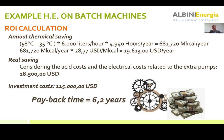This is a gross saving, because to be fair you must reduce such cost by considering the acid cost and the electrical costs related to the extra pumps that we have installed on our skid. So the final net saving is just 18,500 US dollars.